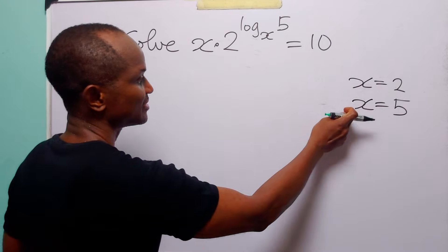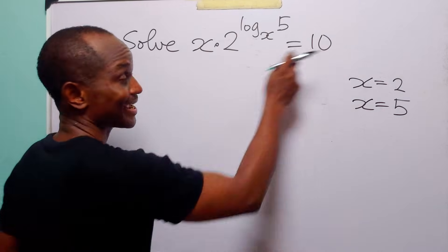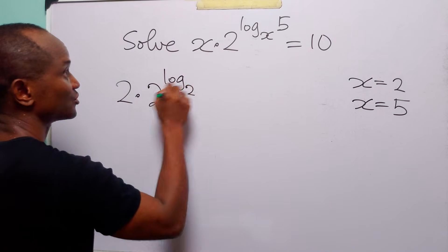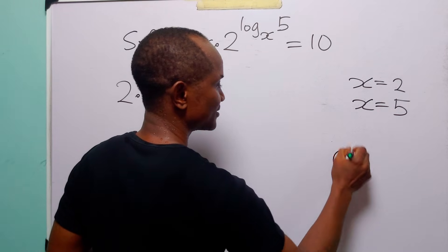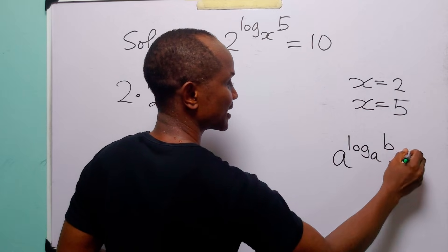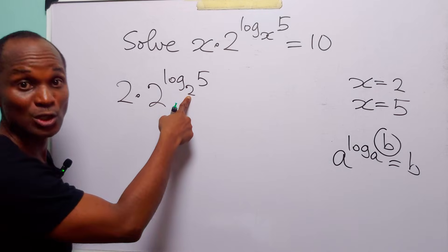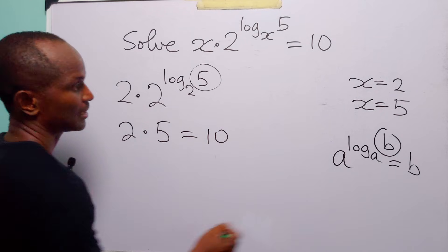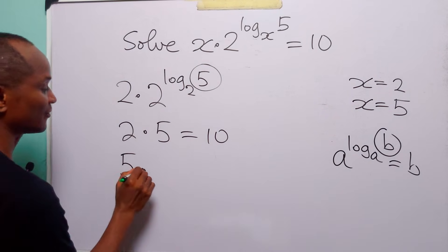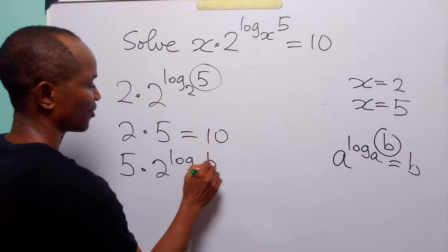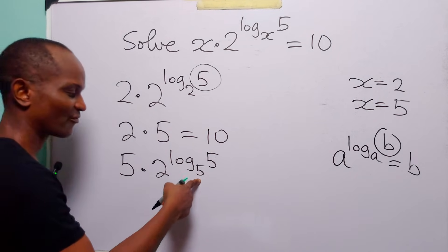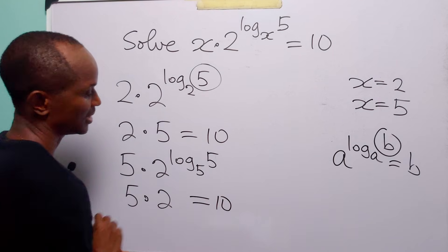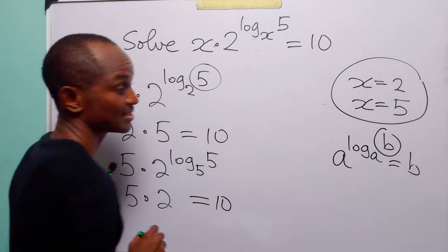To check our answers, let us substitute these values into the left-hand side of the original equation to see if we get 10. When x equals 2, the equation becomes 2 times 2 to the power log base 2 of 5. Using the identity a to the power log base a of b equals b, we get 2 times 5 which equals 10. When x equals 5, the equation becomes 5 times 2 to the power log base 5 of 5. Since log base 5 of 5 equals 1, this is 5 times 2 to the power 1, which is 5 times 2 equals 10. So both values of x satisfy the original equation.